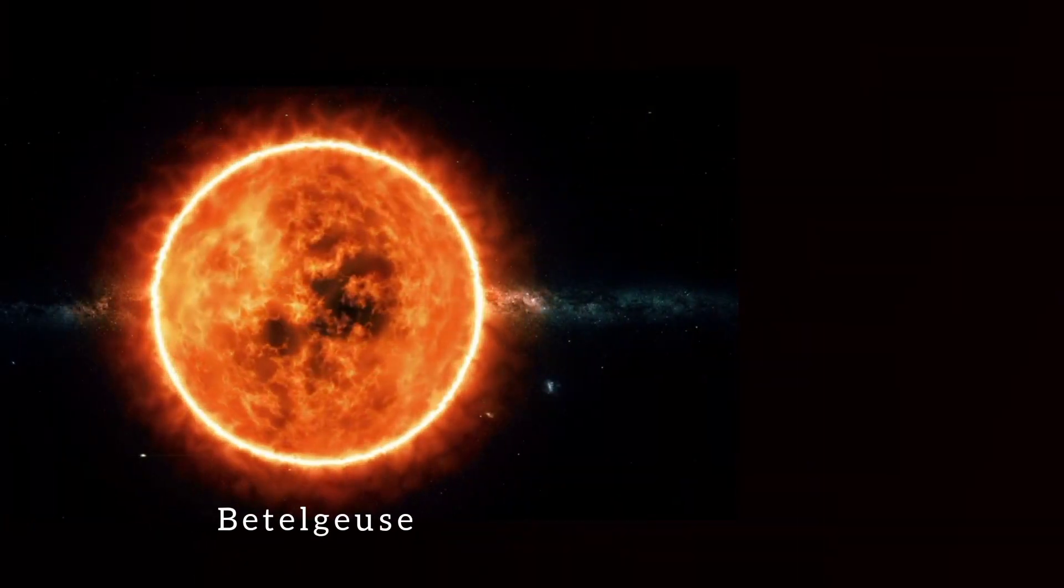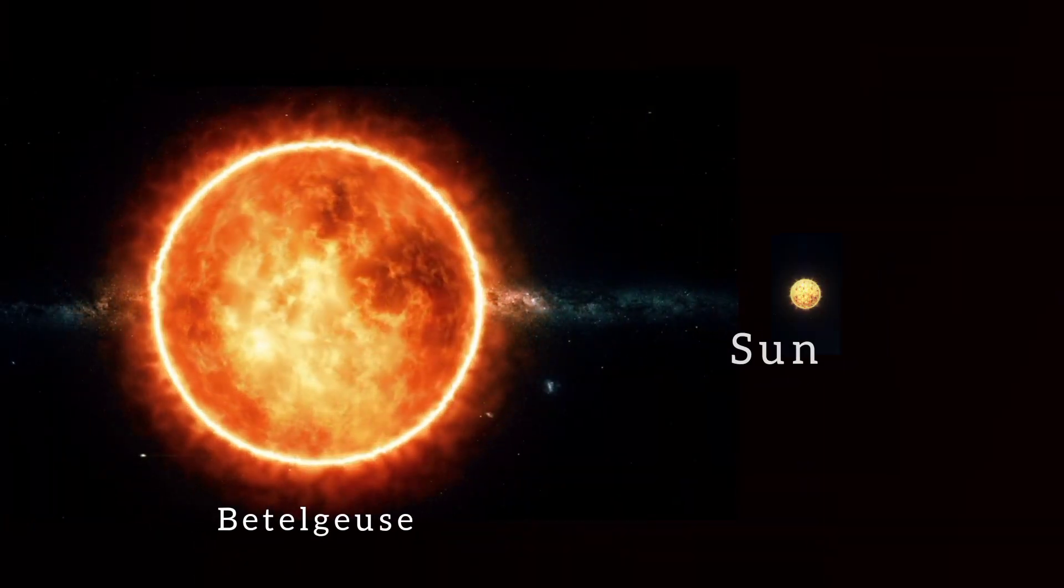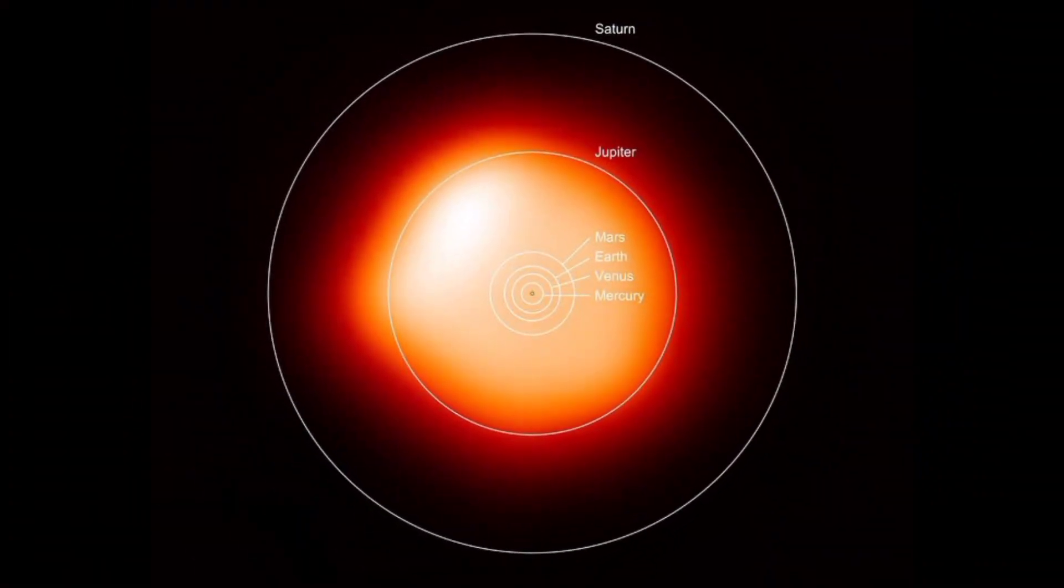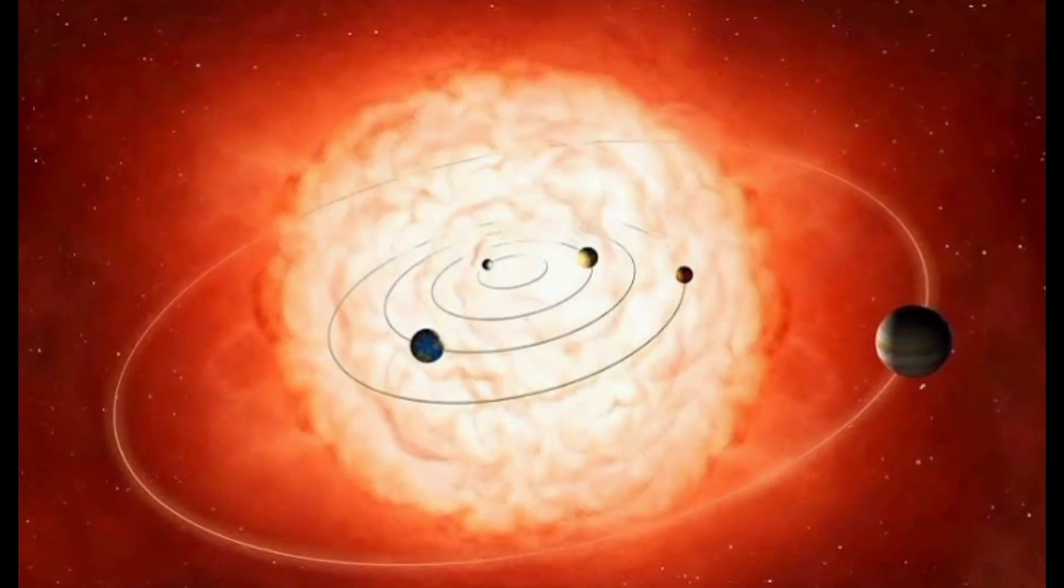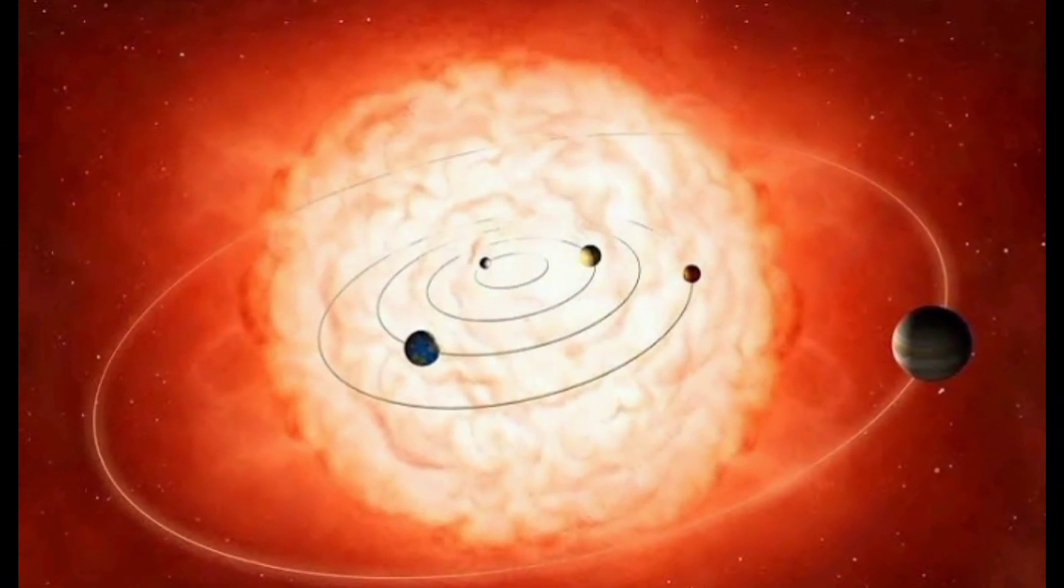Betelgeuse is a true giant, with a diameter over 1,000 times that of our Sun. If this star were placed at the center of our solar system, it would engulf the inner planets, including Earth, and extend all the way to Jupiter.